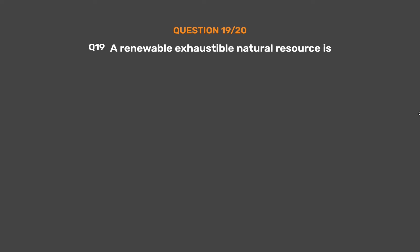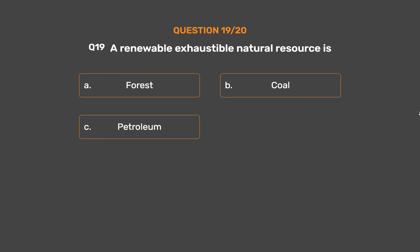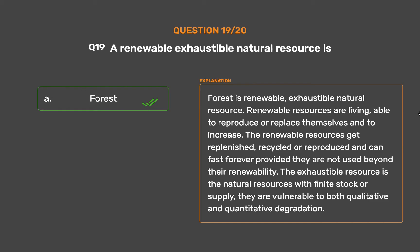Question number nineteen: which are renewable exhaustible natural resources? Option A: forest. Option B: coal. Option C: petroleum. Option D: minerals. The correct answer is option A, forest. Forest is a renewable, exhaustible natural resource. Renewable resources are living, able to reproduce or replace themselves, and to increase. The renewable resources get replenished, recycled, or reproduced and can last forever provided they are not used beyond their renewability. An exhaustible resource is a natural resource with finite stock or supply, vulnerable to both qualitative and quantitative degradation.